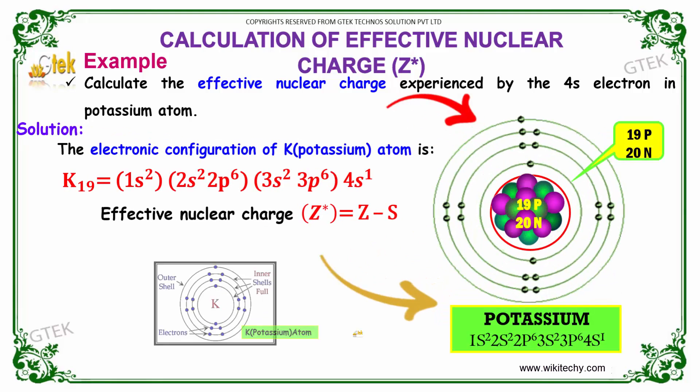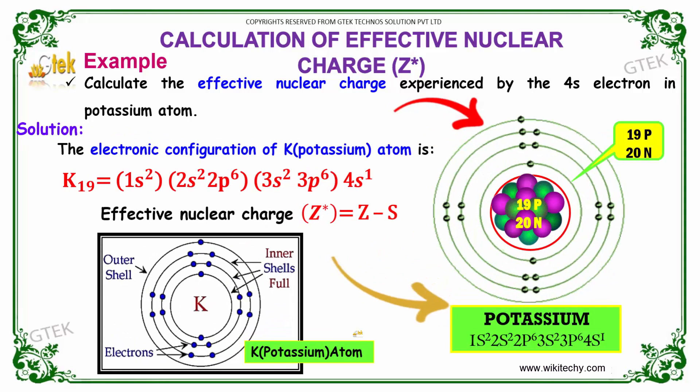Let's go on to a potassium atom. This is the typical example I have taken. Potassium has an atomic number of 19 and here is the electronic configuration: 1s2, 2s2 2p6, 3s2 3p6, 4s1.